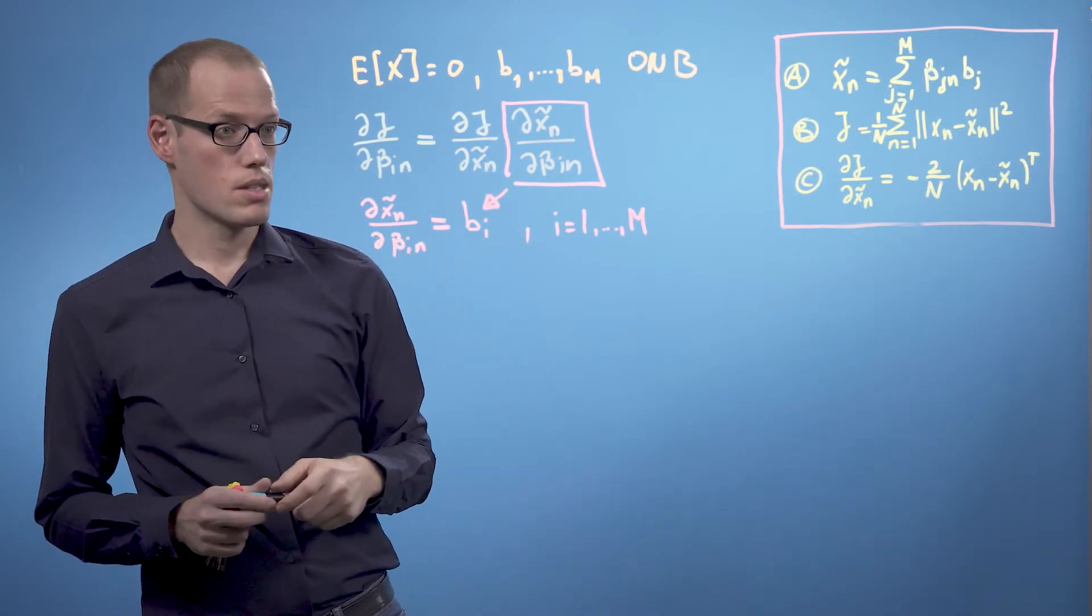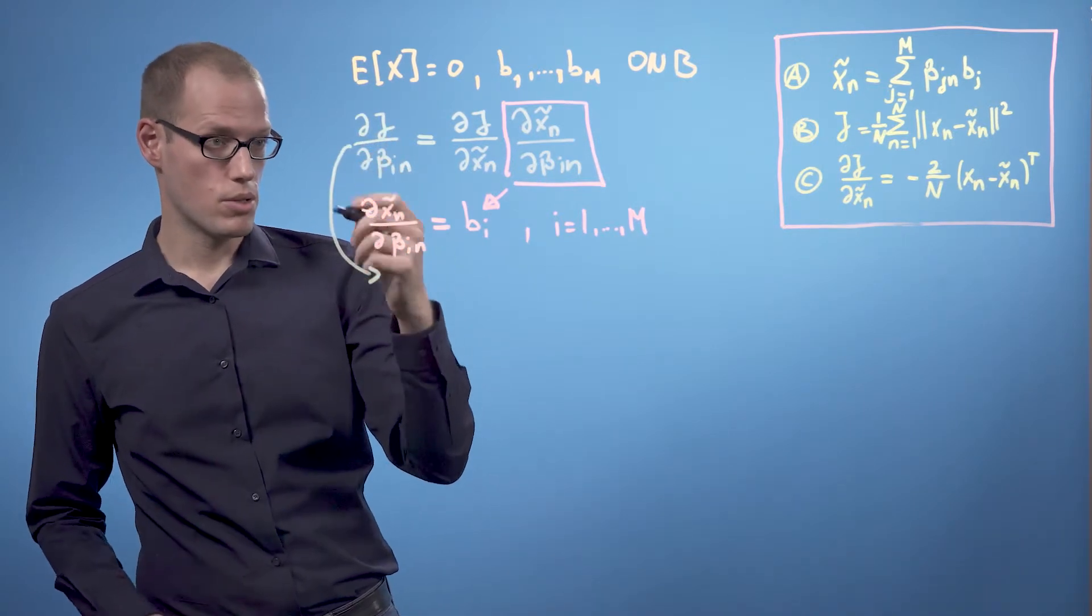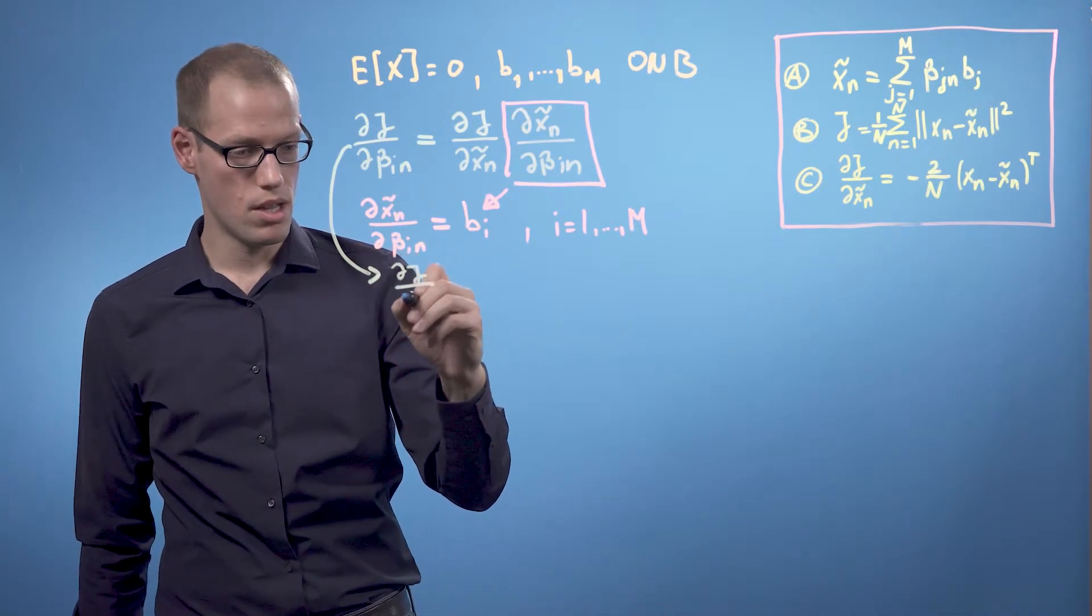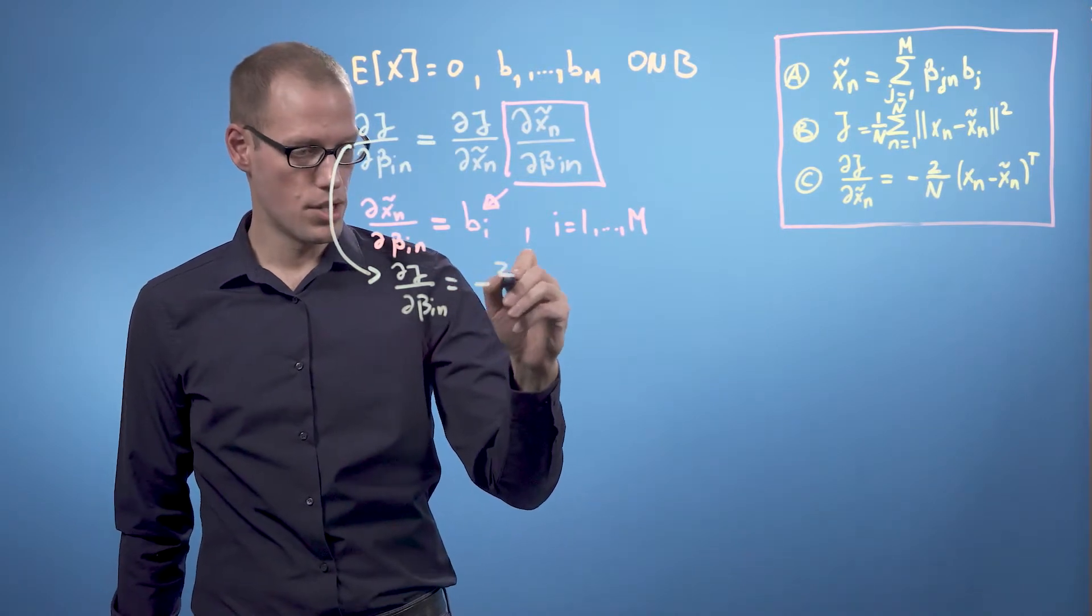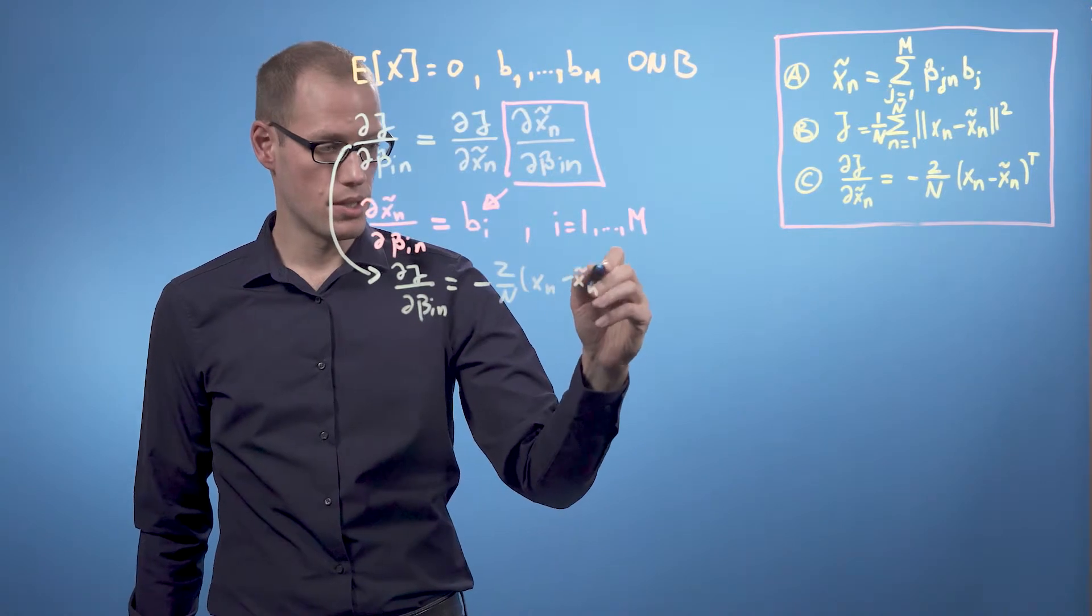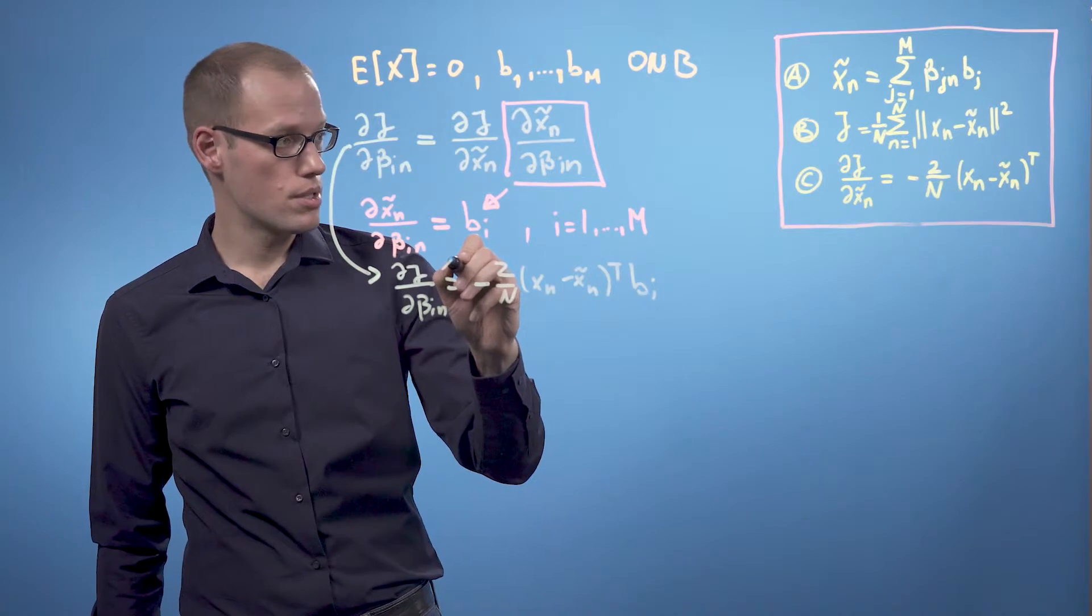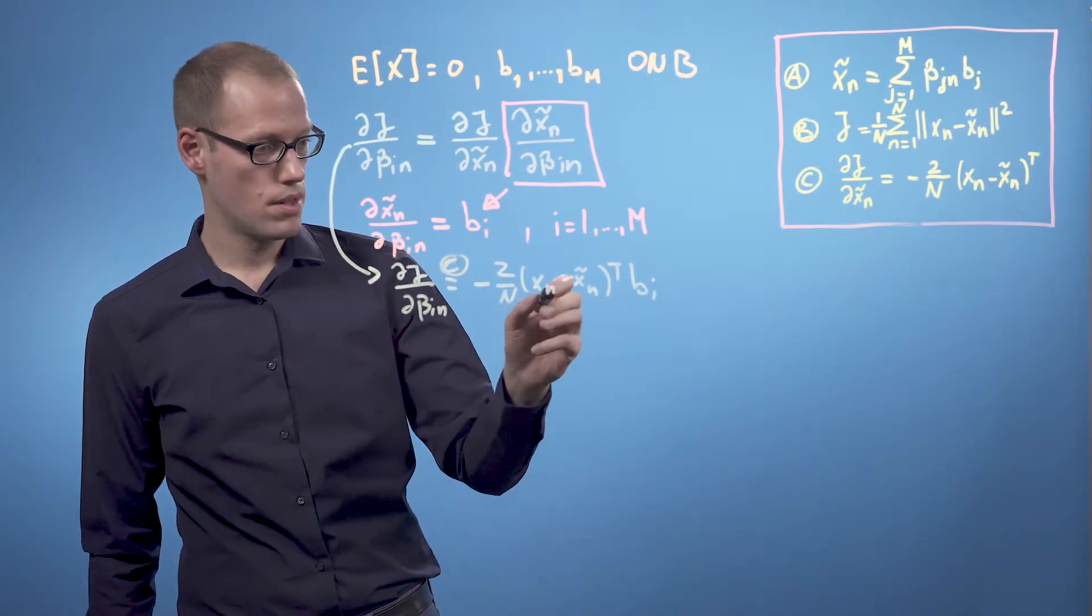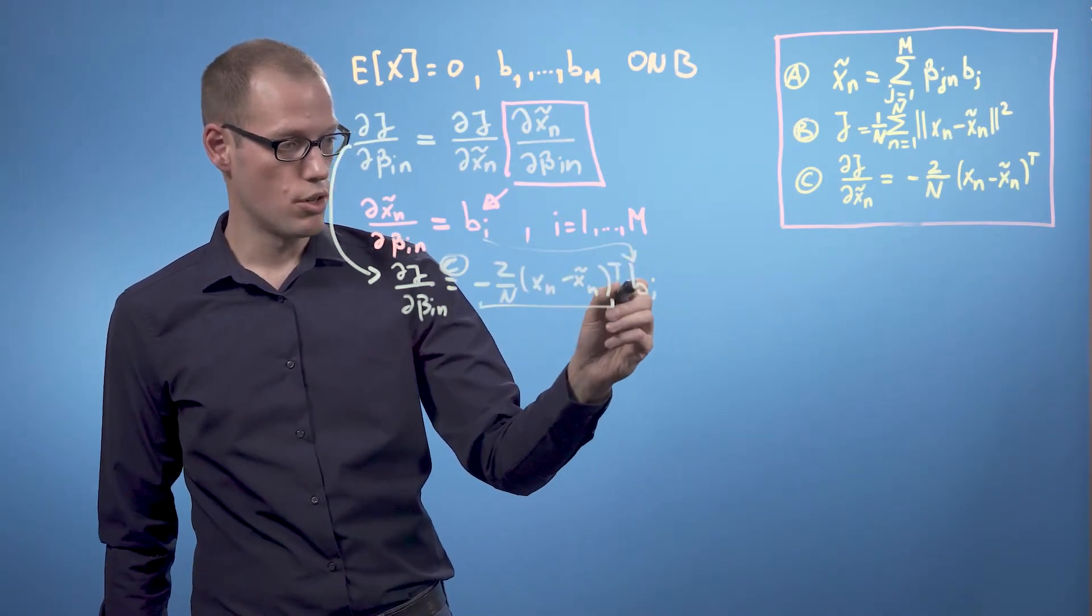But that also means that our derivative of j with respect to dbeta in is now given as dj by dbeta in is minus 2 over n times xn minus xn tilde transpose times bi where here we used equation c to get the first part and we plugged in this bi over here.